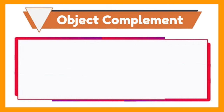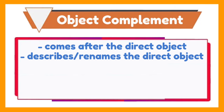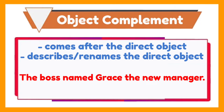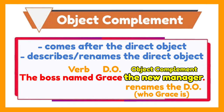Now let us have the object complement. An object complement is a word or phrase that follows a direct object and describes or renames it. For example, the boss named Grace the new manager. The direct object in the sentence is Grace — it receives the verb named. The object complement here is the new manager, because it renames the direct object Grace, or it tells who Grace is.